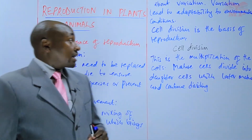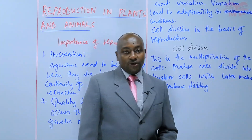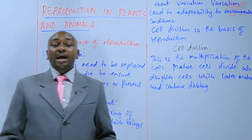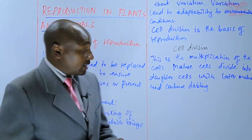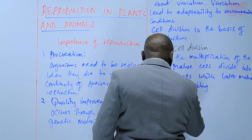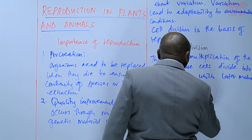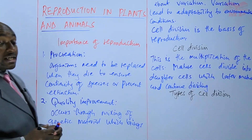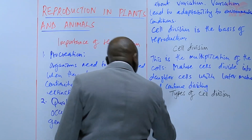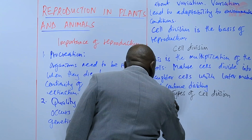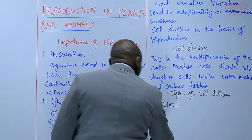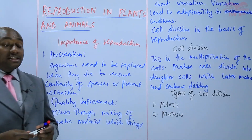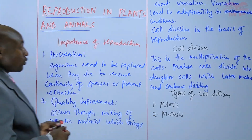From here, we want to look at the types of cell division. One of the objectives of this chapter is to understand the two types of cell division and to be able to describe them. We have two types of cell division: the first one is mitosis, and the second one is meiosis. We are going to look at the two in more detail, starting with mitosis.